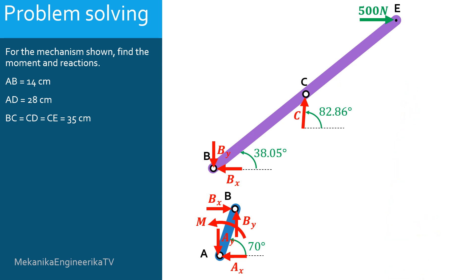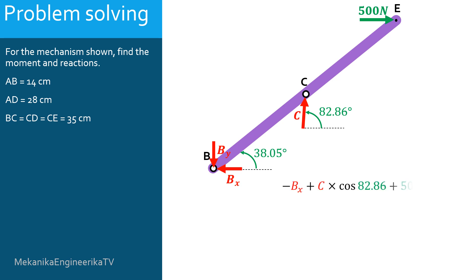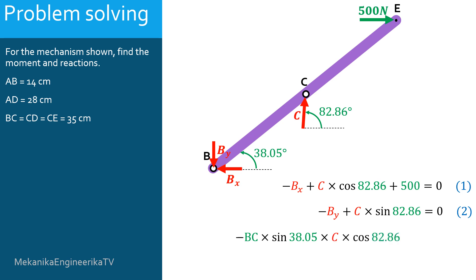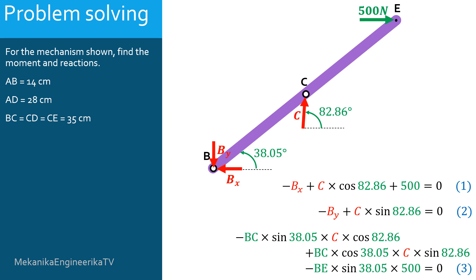Writing the equilibrium equations for bar BCE: horizontal equilibrium gives: minus BX plus C·cos(82.86) plus 500 equals 0 — equation 1. Vertical equilibrium gives: minus BY plus C·sin(82.86) equals 0 — equation 2. Moment equilibrium around point B, counterclockwise positive, gives: minus BC·sin(38.05)·C·cos(82.86) plus BC·cos(38.05)·C·sin(82.86) minus BC·sin(38.05)·500 equals 0 — equation 3.